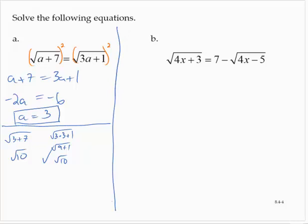Exercise B asks us to solve the square root of 4x plus 3 is equal to 7 minus the square root of 4x minus 5. We can square both sides with this, but we have to be very careful, in particular, with the right-hand side.